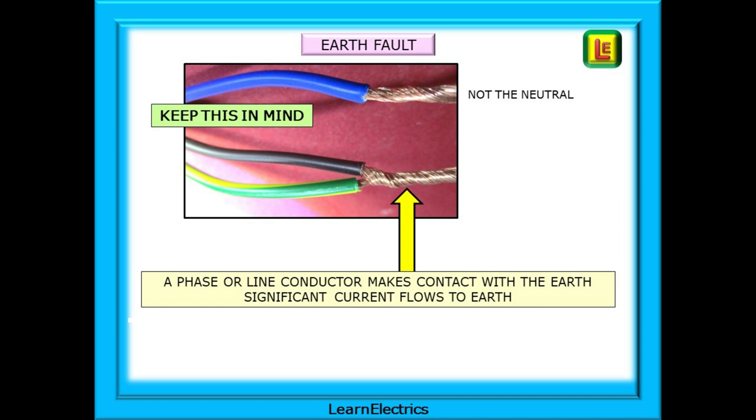A visual reminder of an earth fault that always worked for me when I was learning looked something like this. The line and CPC are connected together. It's telling me that somewhere in that circuit the line and earth or a phase and earth have found electrical continuity. It might be direct cable to cable contact. It might be through metal work but somewhere there is continuity and with earth faults we should expect significant current to flow hundreds of amps.